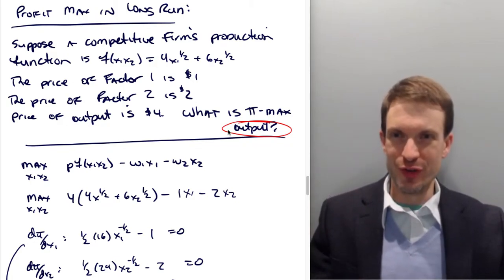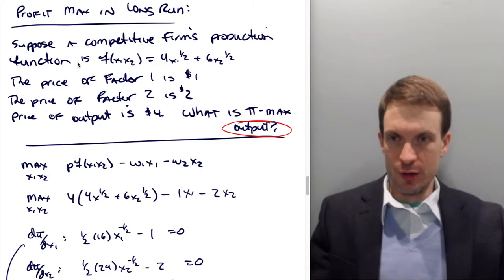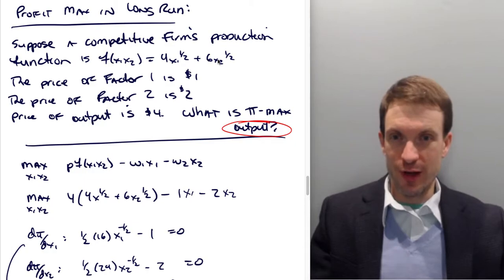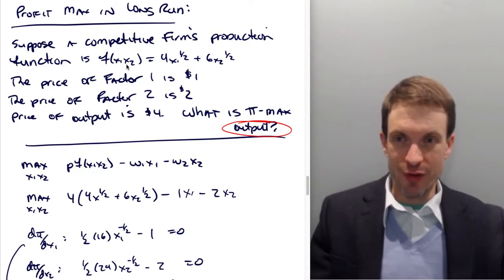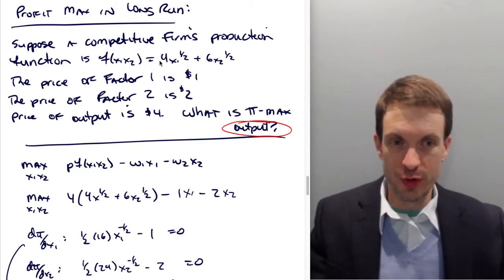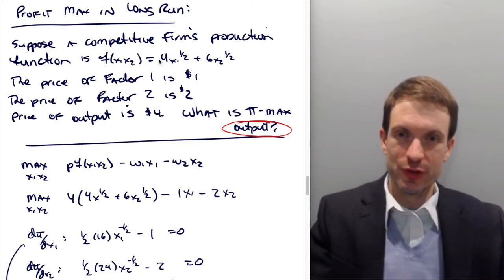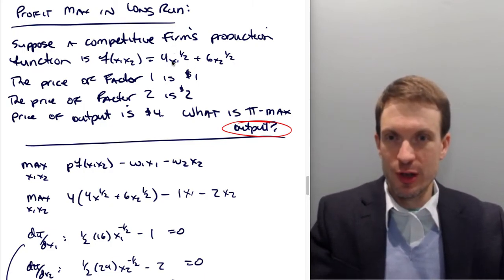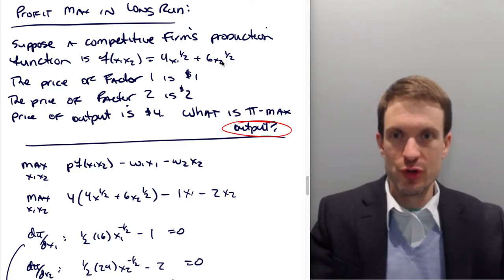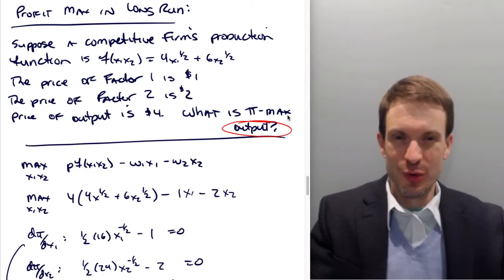Hello and welcome everyone. In this video I'm going to do a long-run profit maximization problem. Suppose a competitive firm's production function is f(x1, x2) equals 4x1 to the half plus 6x2 to the one half, where x1 is the amount of factor 1 we're using, x2 is the amount of factor 2 we're using. Price of factor 1 is $1, price of factor 2 is $2, and the price of the output is $4. So what's our profit maximizing level of output?